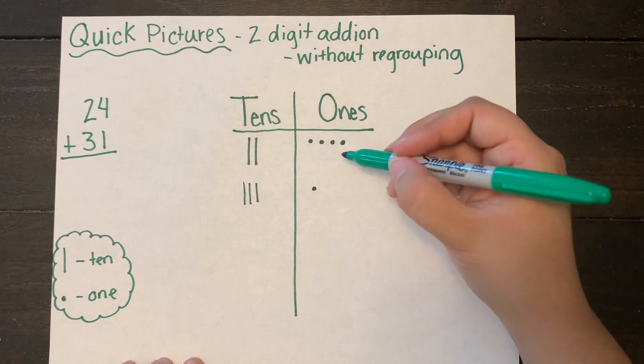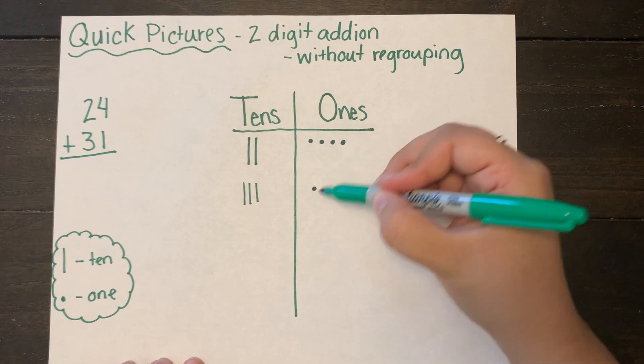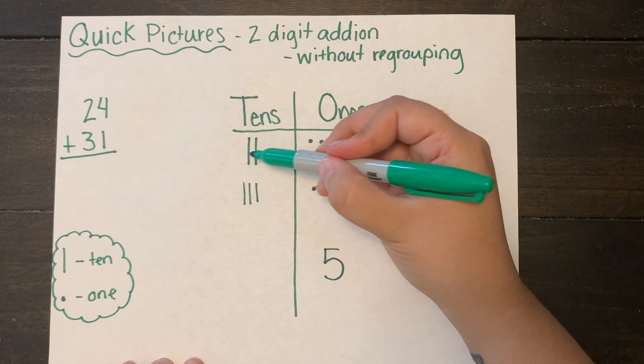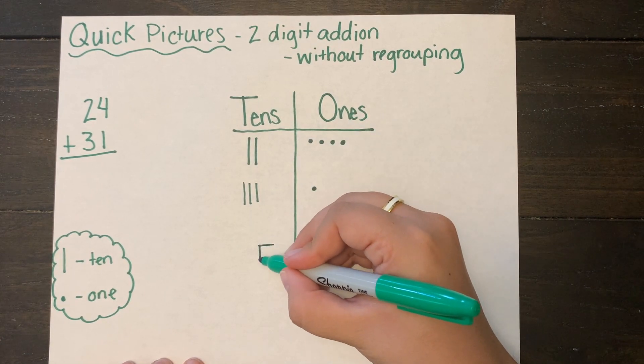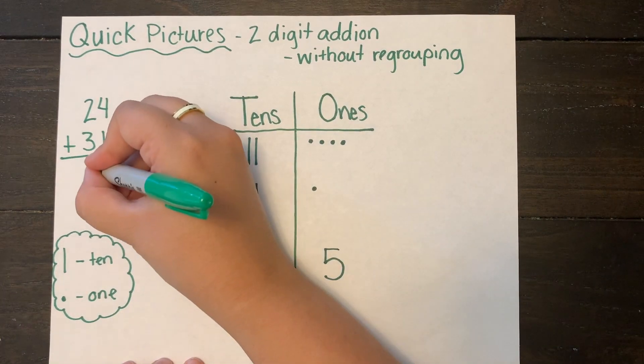And then I'm going to add my ones column first. So I've got one, two, three, four, five - five ones. And one, two, three, four, five tens. Five tens and five ones equals 55 and that is my answer. Simple as that.